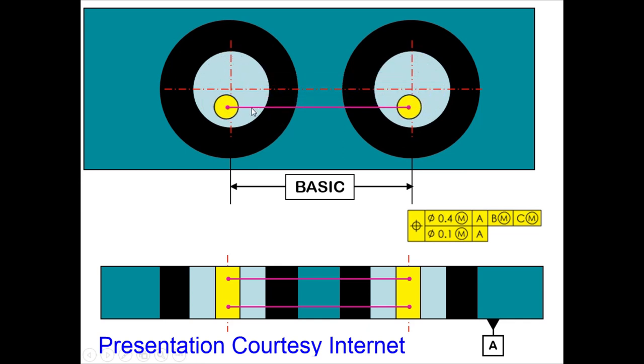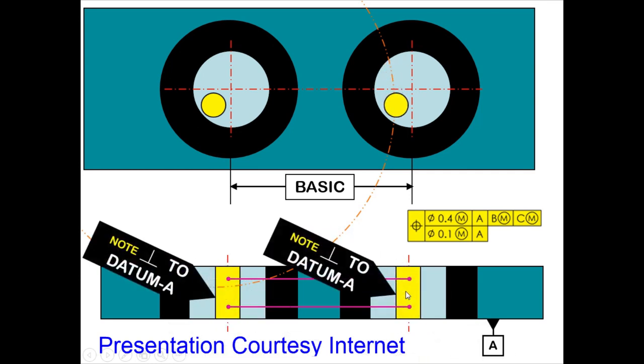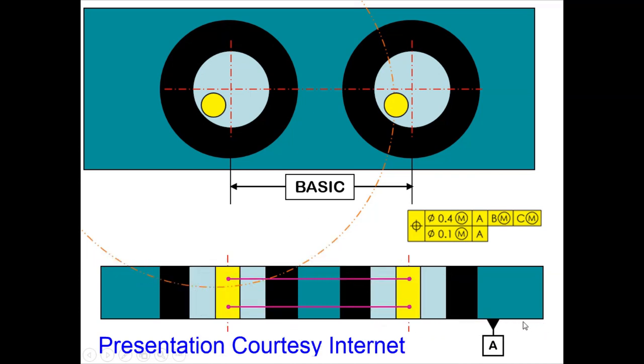Same as the previous case, the yellow color cylinders can float within the 0.4 dia blue cylindrical tolerance zone as you see here. At the same time, the axis of both these cylinders must be always perpendicular to datum A. The first level controls the pattern, and the second level controls the orientation along with the relationship between the two holes.